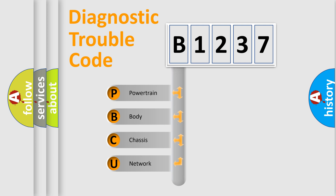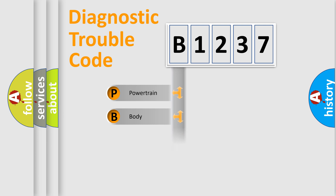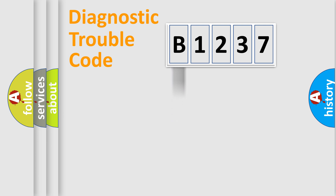We divide the electric system of the automobile into four basic units: Powertrain, Body, Chassis, and Network.